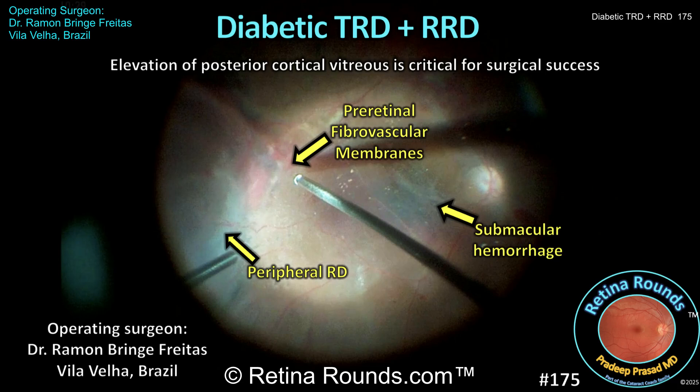Retina Rounds, episode number 175: Diabetic Tractional and Regmatogenous Retinal Detachment. Posterior hyaloid elevation is a critical step when performing vitrectomy for a regmatogenous retinal detachment. In diabetic patients, this step can be challenging due to the presence of vitreous schesis, tight vitreo-retinal adhesions, and the lack of countertraction when elevating membranes and vitreous from detached retina. Our guest surgeon is Dr. Ramon Bringhe Freitas, a vitreo-retinal specialist at Evangelico Vila Velia Hospital in Brazil. His patient is a 42-year-old phacic diabetic male with mild tractional membranes who now presents with a macula-involving regmatogenous retinal detachment. Let's check out the surgical approach, and thank you, Dr. Bringhe Freitas, for sharing this case.